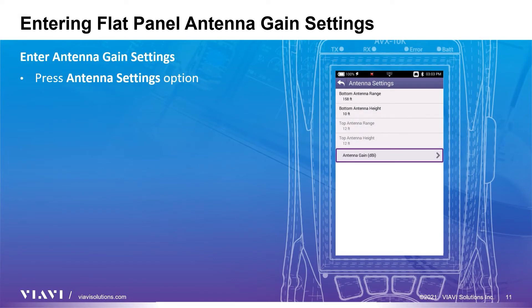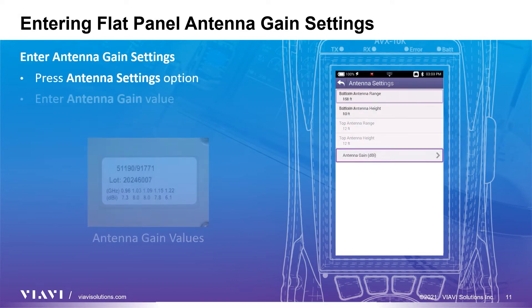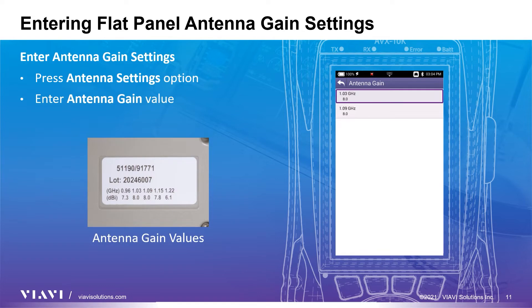Next, you will need to enter the gain values that can be found on the flat panel antenna label. Using the correct gain values for the antenna being used is essential to receive accurate parametric and MTL measurements. Go to the Antenna Gain Settings window and enter the gain values as shown on the antenna label.